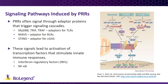Upon binding of RLRs like RIG-I and MDA5 by viral RNA in the cytoplasm, a mitochondria-associated adapter protein called MAVS is activated. MAVS then acts as a signaling scaffold to induce activation of NF-κB and interferon regulatory factors, or IRFs. IRFs are transcription factors that regulate innate immune signals known as interferons. cGAS, the PRR that detects viral DNA, utilizes the secondary messenger cyclic GAMP to activate an adapter protein called STING, which then induces signaling to activate interferon production.